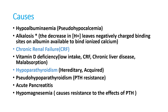In alkalosis, a decrease in hydrogen ions leaves negatively charged binding sites on albumin available to bind ionized calcium. Chronic renal failure is one of the common causes of hypocalcemia. Vitamin D deficiency is nowadays very common, caused by low intake, low sun exposure, chronic renal failure, chronic liver failure, and malabsorption.